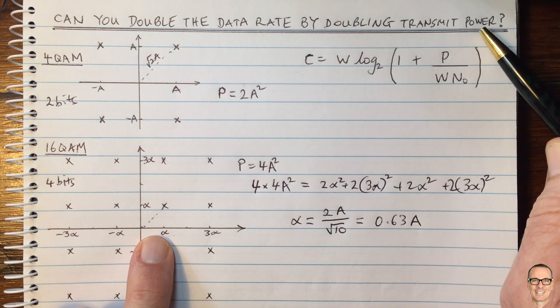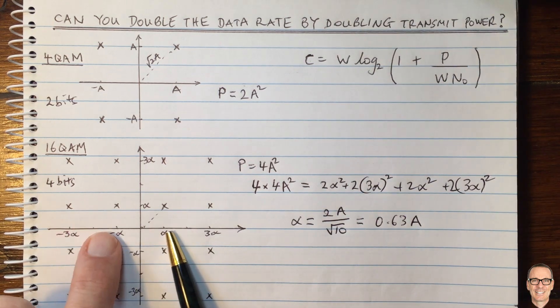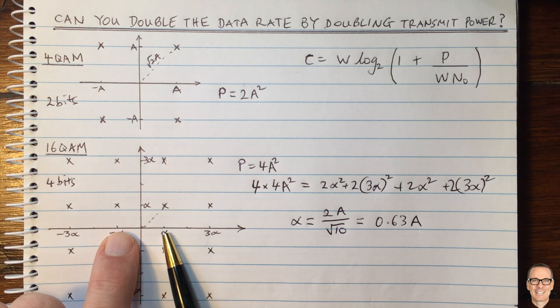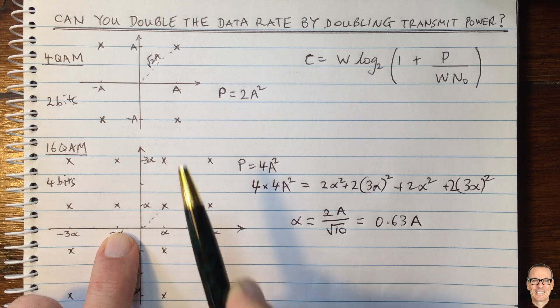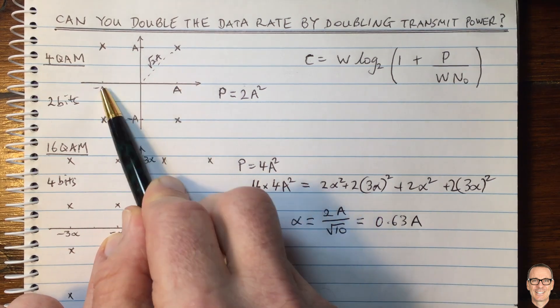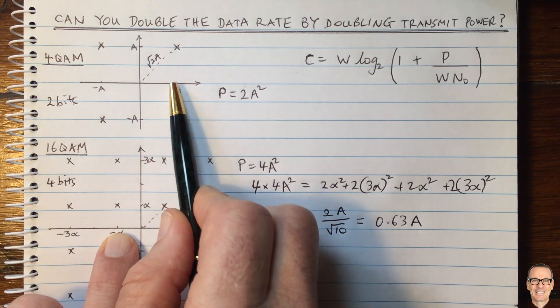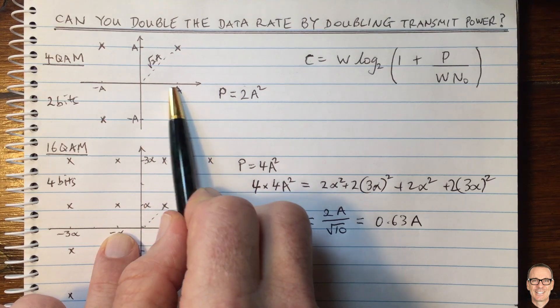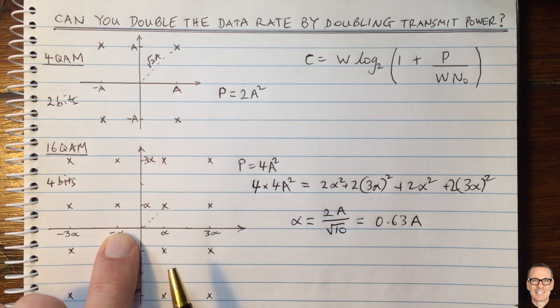Even though we've doubled the transmit power, our constellation points are closer together, which means they're going to be more susceptible to errors. Because here they are a distance of 2a apart. And so noise would have to be bigger than a in order for an error to be made.